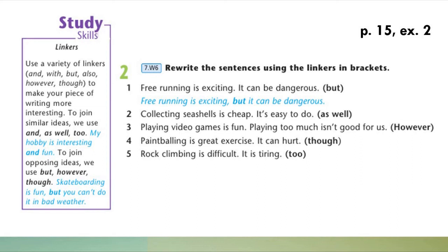Сейчас попробуйте использовать их при письме, выполнив упражнение 2 на странице 15. Например, free running is exciting и вторая часть предложения it can be dangerous. С помощью союза but, но, мы можем объединить эти два предложения в одно сложное. Free running is exciting, but it can be dangerous. То есть, бег он восхитителен, но он может быть опасен. В следующем предложении вам нужно использовать слово as well, что означает также, кроме того или вдобавок. Примерно такие значения у него на русском языке.